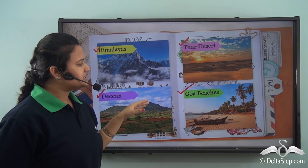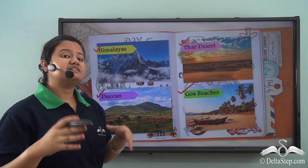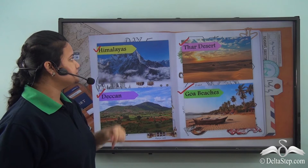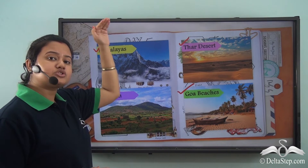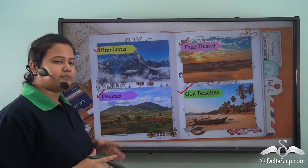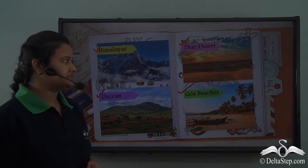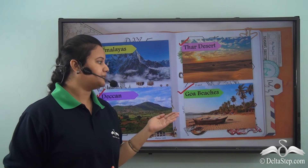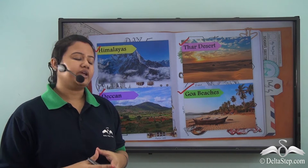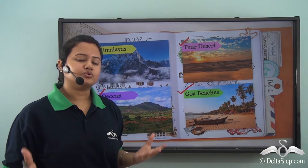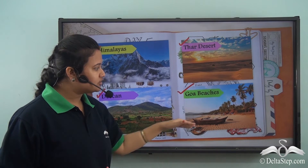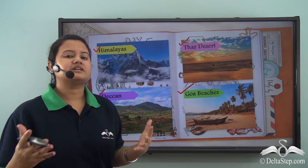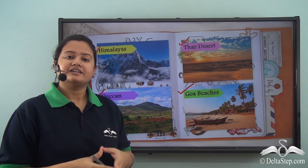Each of these pictures represents different landforms present on the earth's surface. In the first picture we can see tall snow-capped mountains. In another picture we can see a highland, and in another we can see a vast endless desert. Coming to the last picture, we can see beaches or coastal plains.